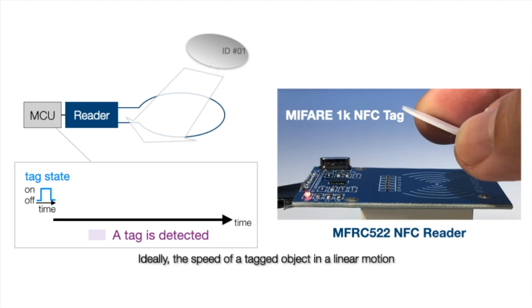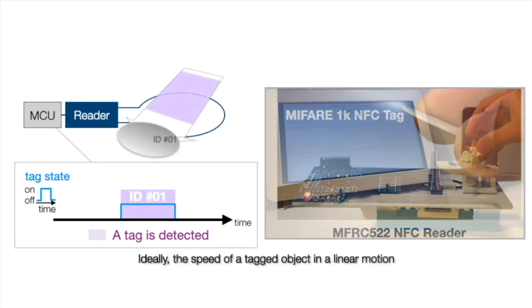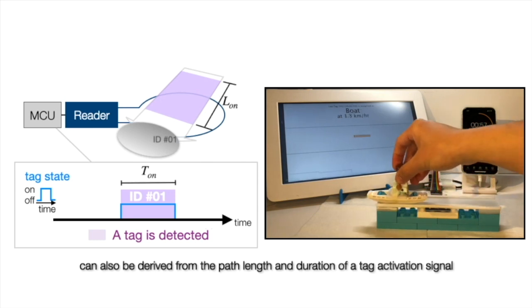Ideally, the speed of a tagged object in linear motion can also be derived from the pattern and duration of the tag activation signal.